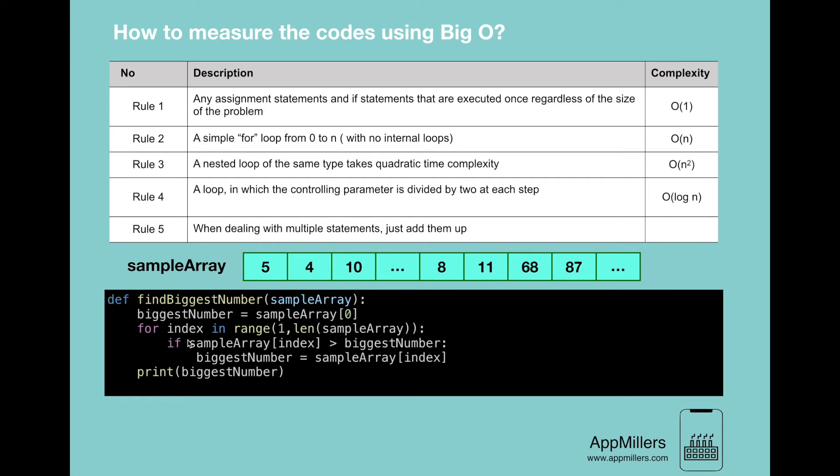The first line here is assigning a value. So according to our first rule, the time complexity of assigning a value to a variable is O(1).